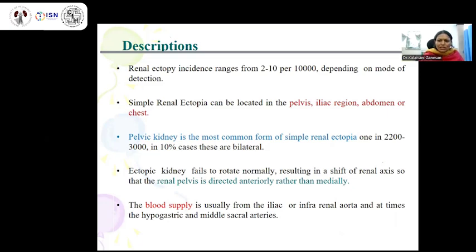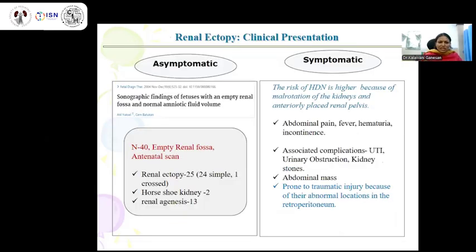Ectopic kidneys also fail to rotate normally, resulting in a shift of renal axis so that the renal pelvis is directed anteriorly rather than medially. The blood supply is usually from the iliac or infrarenal aorta, and at times from the hypogastric and middle sacral arteries. In a sonographic study of 40 antenatal scans with empty renal fossa, 25 had renal ectopia — 24 simple renal ectopia and one crossed ectopia — two had horseshoe kidney, and renal agenesis was noted in 13.